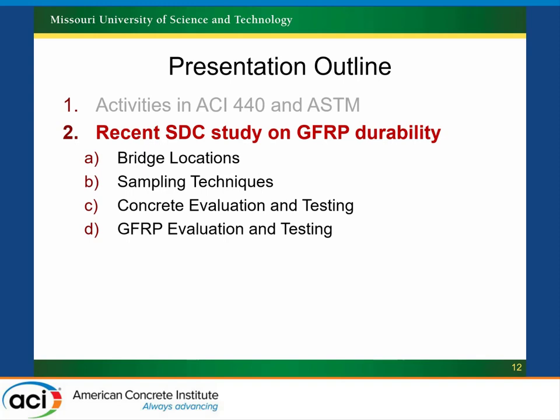I want to talk about what I think is the first large-scale study in the United States looking at the actual durability performance of FRP materials. FRP materials are linear elastic. With mild steel, we design for yield strength and can count on strain hardening for additional capacity. For FRP, being linear elastic, one concern has always been long-term performance. I want to show what we're working on through the strategic development part of the ACI Foundation.